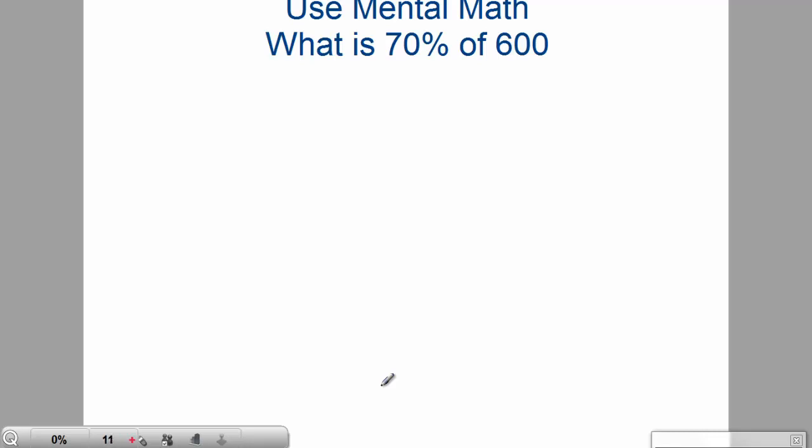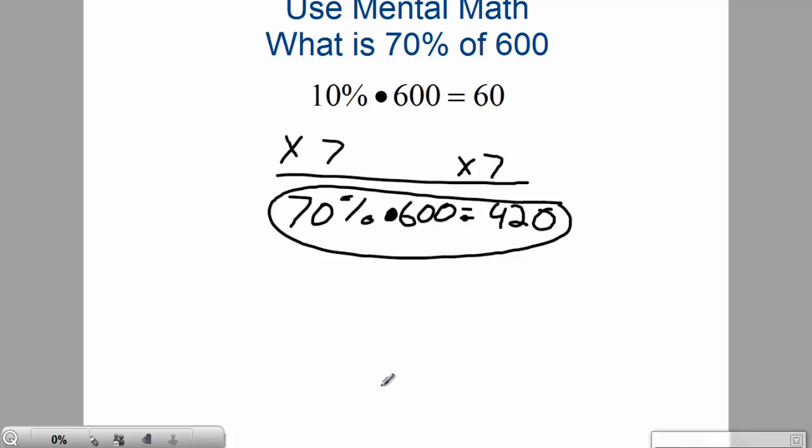Here you got 70% of 600. Once again, there's several ways to skin this kitty cat. One option, the way I would prefer to use on this one, would be 10% of 600 is going to be 60. From there, multiply both sides by 7, and we find 70% of 600 is 420.